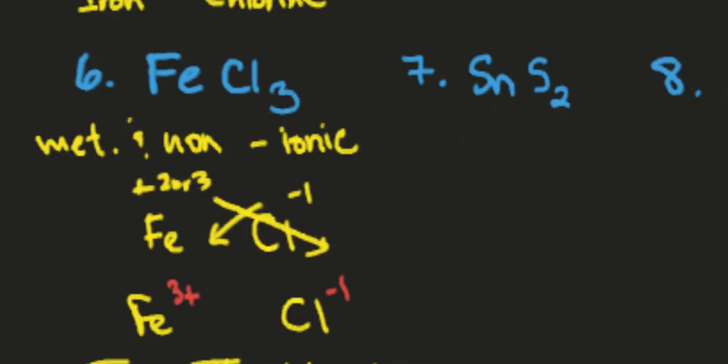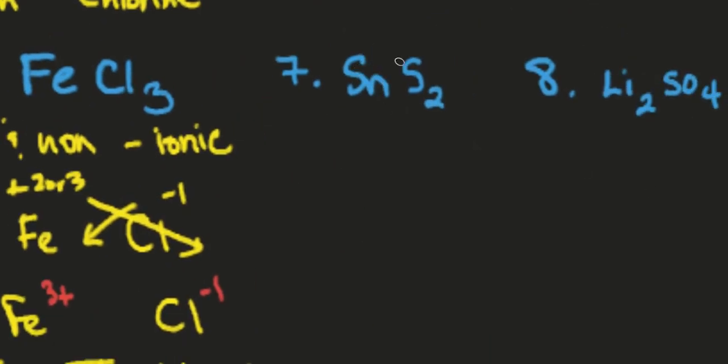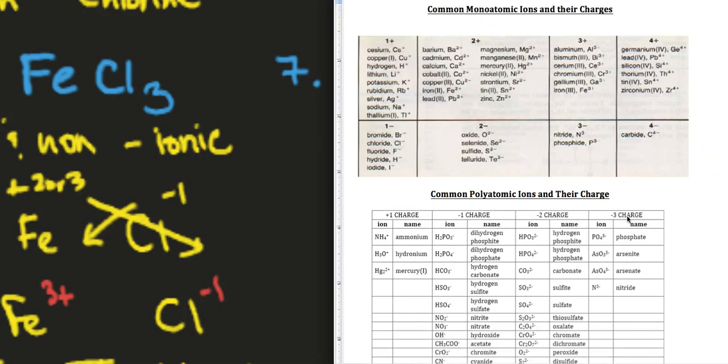So same scenario with this next one. This is a metal nonmetal. So it's ionic. And because it's ionic we gotta ask is tin multivalent. If you don't know your list we come over here and we see the tin is over here in the plus two charges as well as in the plus four charge. So it is multivalent. We have to use a stock system.